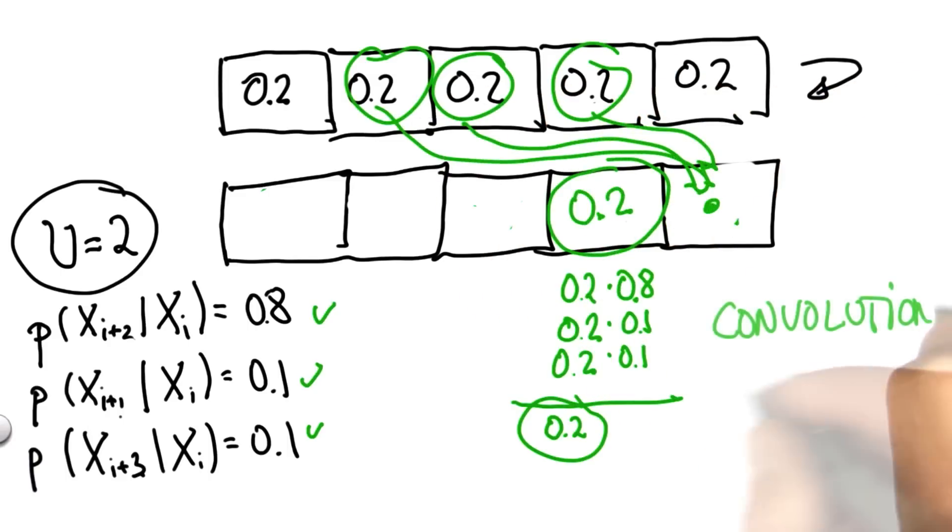That's called a convolution. As we'll see later, there's a very nice way to write this mathematically as something called theorem of total probability. But for the time being, I'd like to program this in.